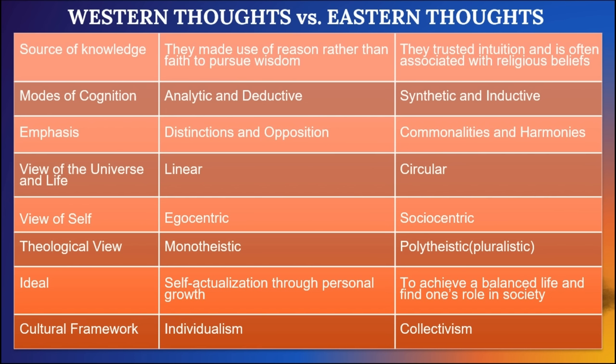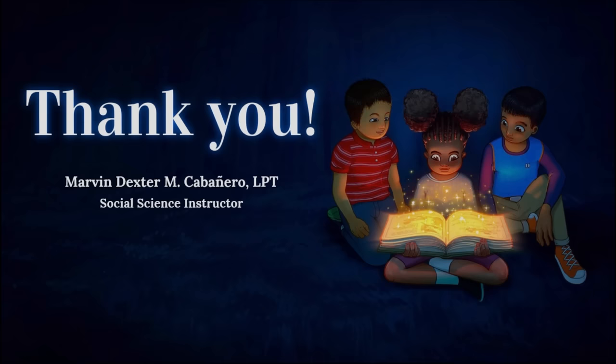In terms of theological view: western thought is monotheistic — one God or supreme being — while eastern thought is polytheistic, recognizing more than one god. Regarding the ideal: western thought pursues self-actualization through personal growth, which is very individualistic. Eastern thought aims to achieve a balanced life and find one's role in society. In terms of cultural framework: western thought sees the self as a distinct and autonomous entity, independent from the universe and society, while eastern thought views the self as just one part of the society and universe.